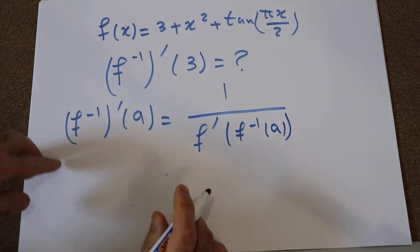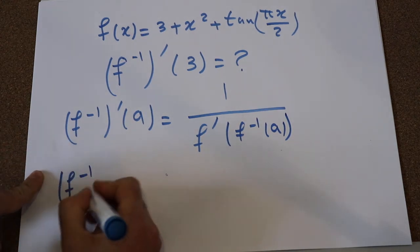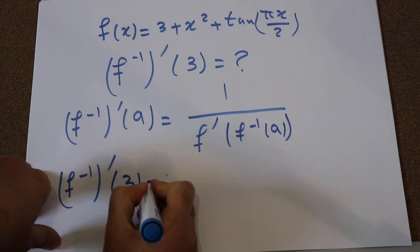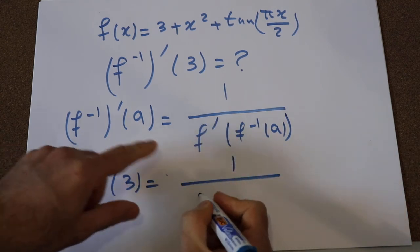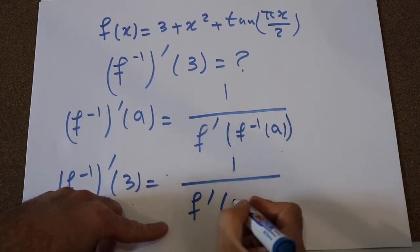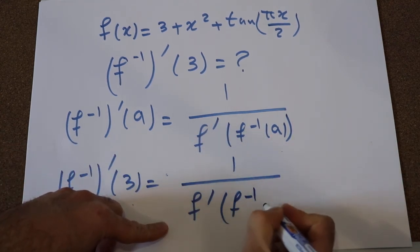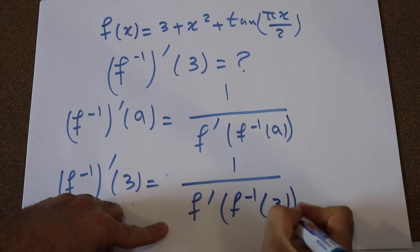In other words, f⁻¹ prime(3) will be equal to 1 divided by f prime of the inverse of this function at 3.